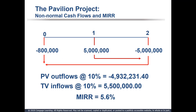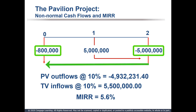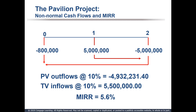Now that we see how MIRR works, let's revisit our pavilion project, as it illustrates an important point about finding the values to use for MIRR. All outflows are present valued to time 0 and summed to use as the present value — outflows to the left on the timeline. All inflows are future valued and summed to use as the future value — inflows to the right on the timeline. With the pavilion project, we have two outflows at time 0 and time 2, so the cash flow at time 2 must be discounted back to time 0 and added to cash flow 0. Negative $5 million divided by 1.10 squared equals negative $4,132,231.40. Adding the initial $800,000 outflow results in a present value of negative $4,932,231.40.